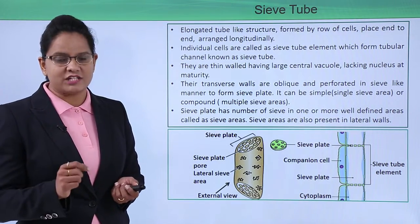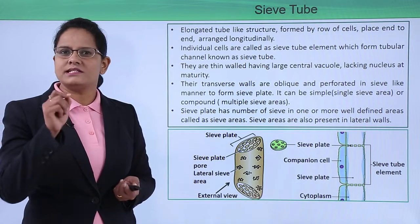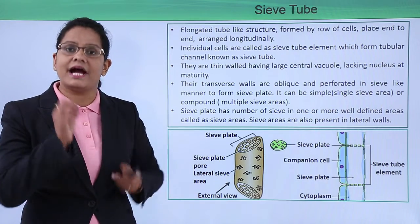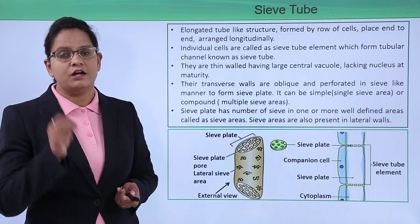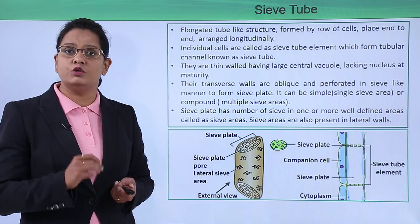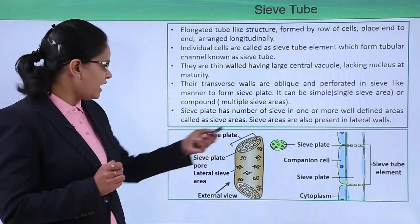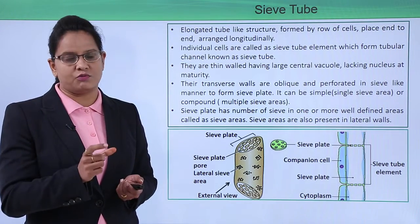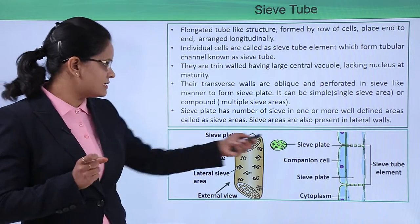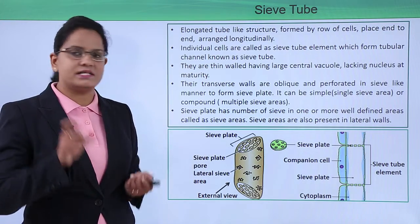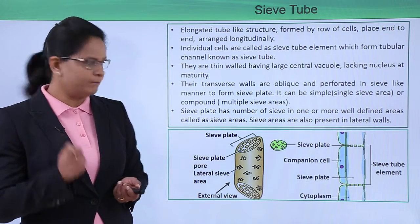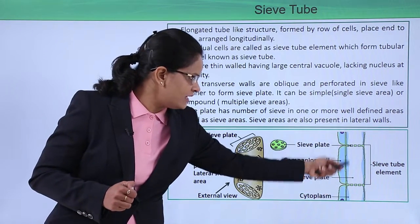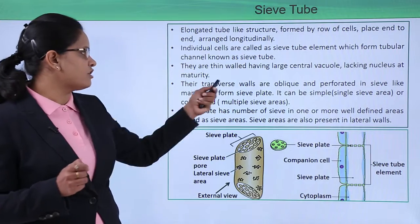The transverse wall, as you can see in the diagram of a sieve tube member, is oblique. You can see some pores — those pores may be clumped together in one area, and that area is known as the sieve area. In the lateral walls of the sieve tube, sieve areas are present. These sieve-like pores together form a plate in the transverse wall, and that plate is known as the sieve plate.